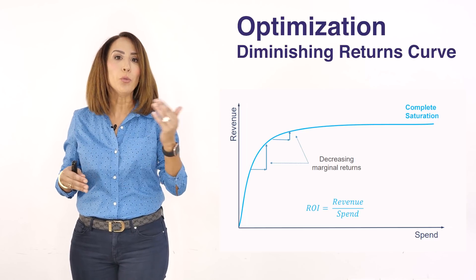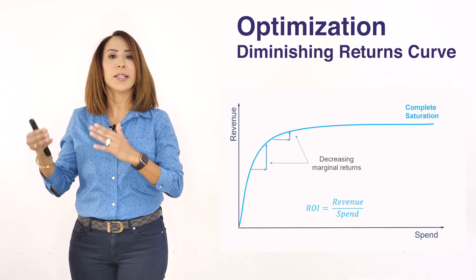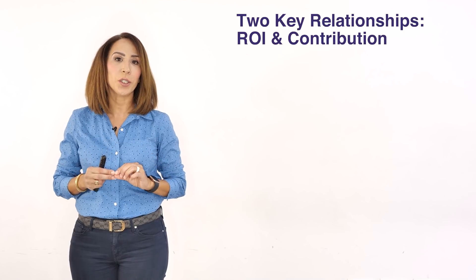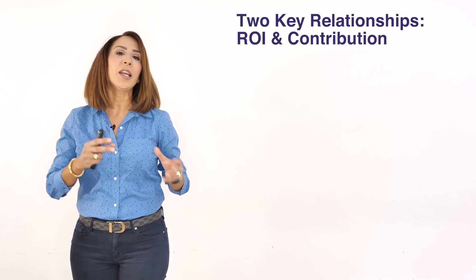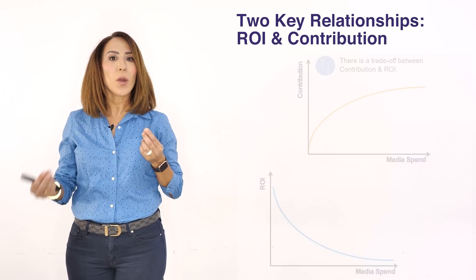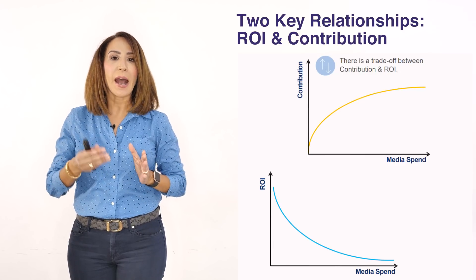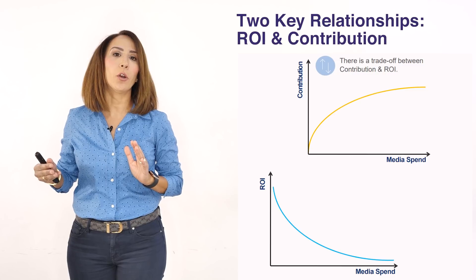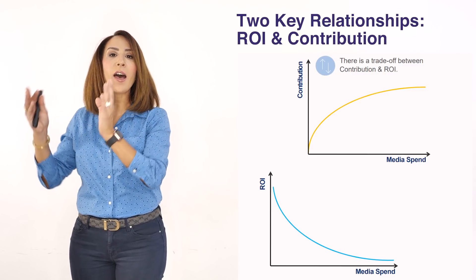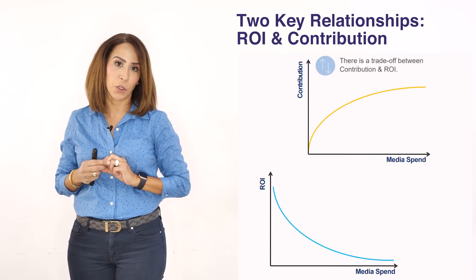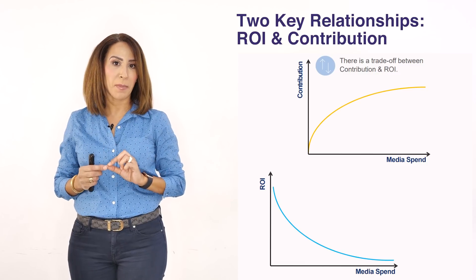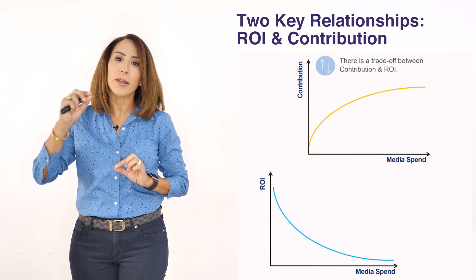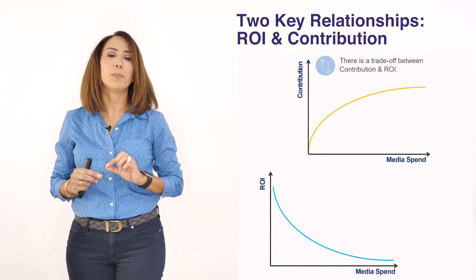That's where you need to move money from a saturated channel to one that is less saturated. There is an important trade-off between ROI and contribution: as you spend more money, you get more contribution but with less and less incremental revenue, so your average ROI keeps decreasing due to diminishing returns. This means ROI alone is not enough to create an optimization exercise. It's very important to look at the level of saturation in each curve to decide where to spend your next dollar.